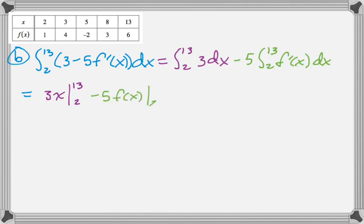Integrate 3 dx to get 3x, and then we'll evaluate that at 2 and 13, and then integrate f' to get f of x, and we'll evaluate that at 2 and 13. So 3 times 13 is 39, 2 times 3 is 6, so 39 minus 6, and then minus 5,